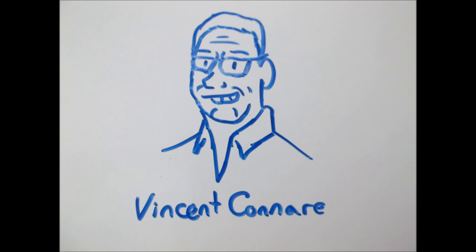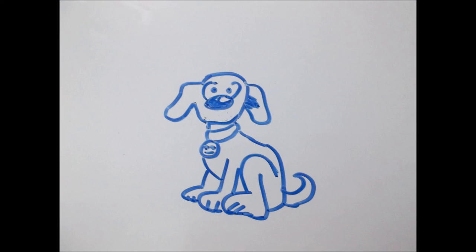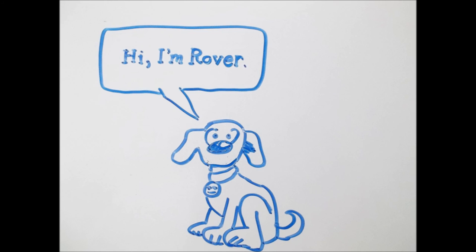People hate Comic Sans. It was originally created by Vincent Conair, who was inspired by the children's computer program Microsoft Bob. In it, there was a cartoon dog named Rover who was supposed to give a friendly vibe to children. However, instead of having some sort of fun and playful font filling up his speech bubbles, he was pinned with the boring and business-like Times New Roman.